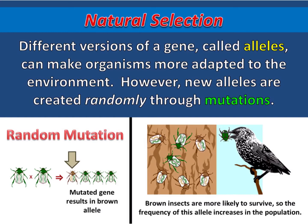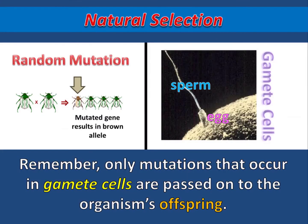However, new alleles are created randomly through mutations. Remember, only mutations that occur in gamete cells are passed on to the organism's offspring.